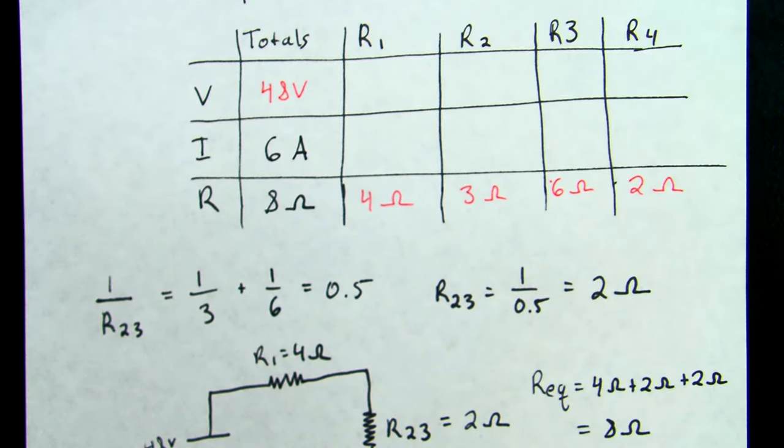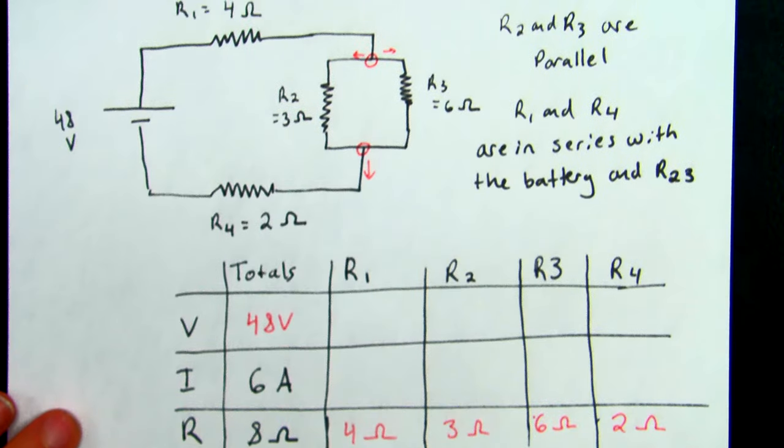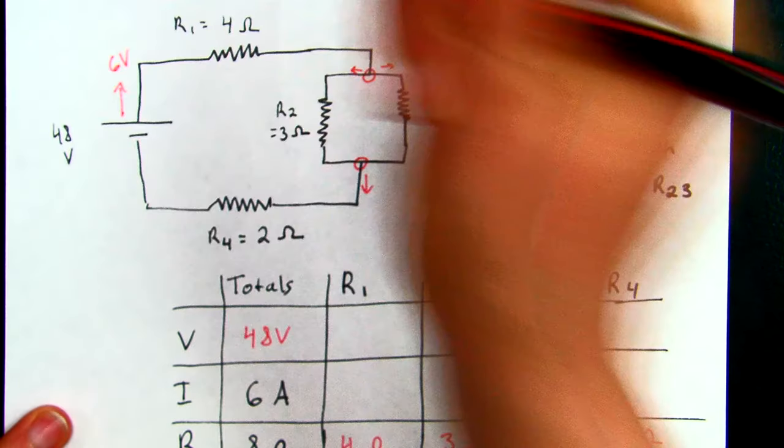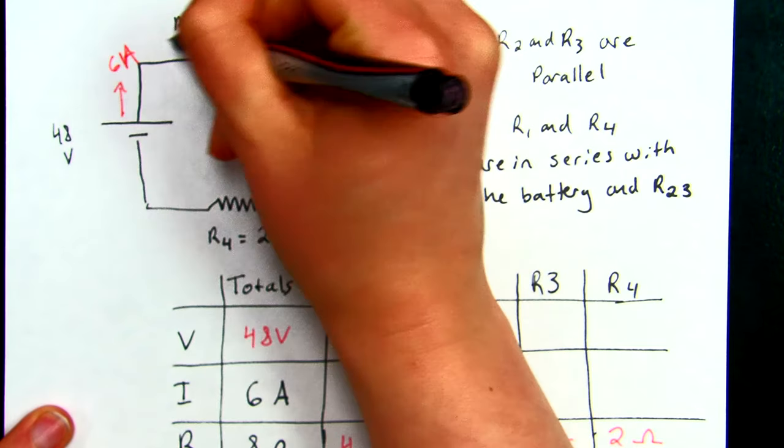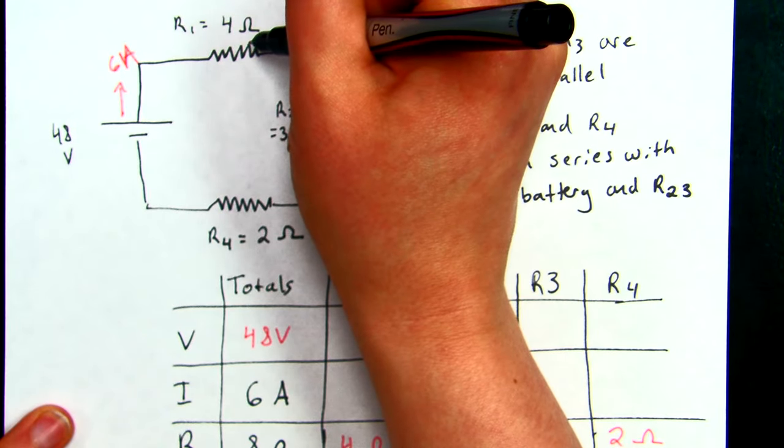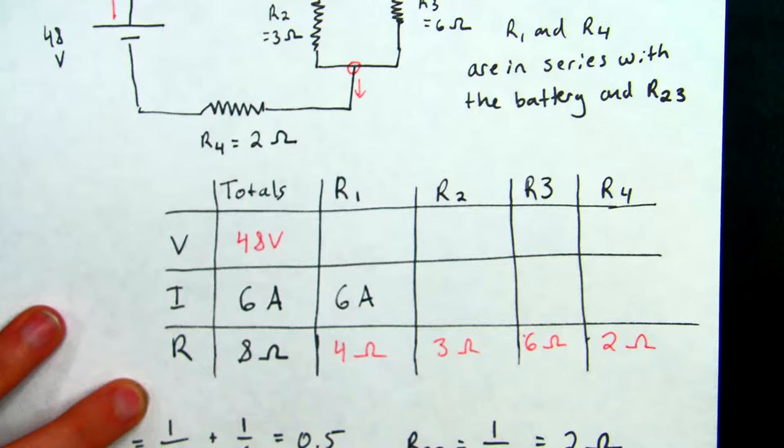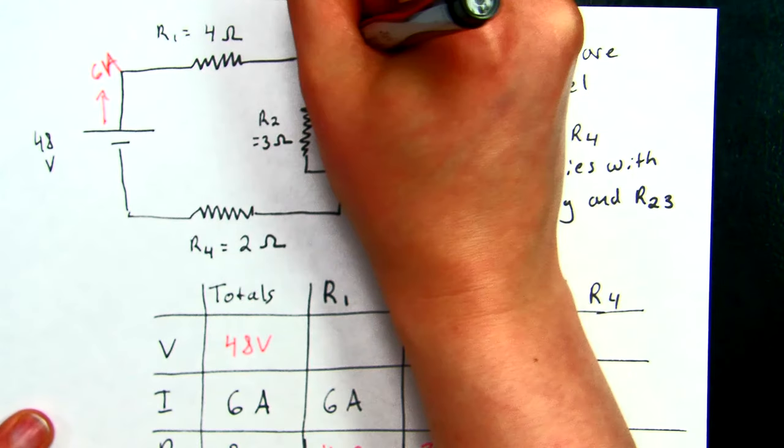Now here's where identifying the pieces of your circuit is very important. With the series rule, we know that the current has to be the same. So our total current says, hey, you're going to leave the battery with 6 amps, and you're going to go through R1. Well, you haven't branched off, so your current must still be 6 amps. After you pass through R1, we're still 6 amps.